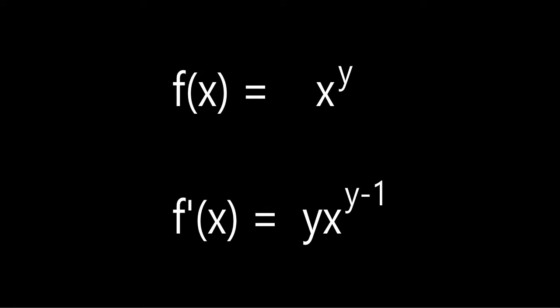Derivatives in polynomial functions share the same idea. Here's an oversimplified function: f of x equals x to the power of y. The derivative of which would be that y here times x to the power of y minus 1. So the x is being multiplied with the y and the y up here is being subtracted by 1.